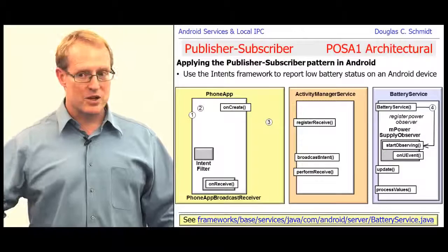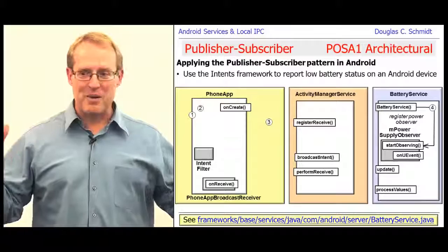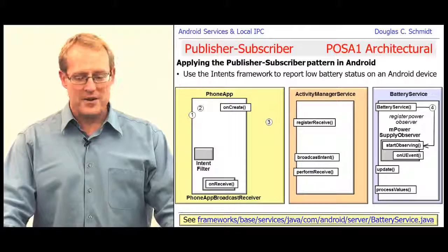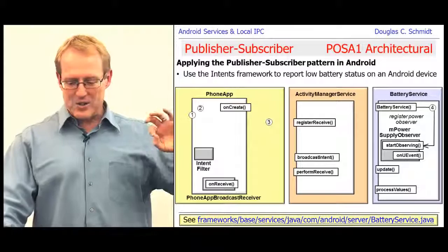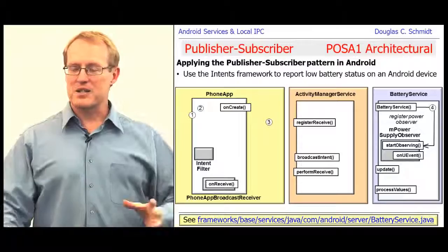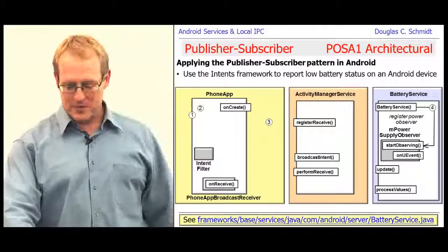At some point later, the battery service — a system service — starts running. When it starts up, its constructor does something interesting: it creates a uEventObserver called mPowerSupplyObserver. This is a cool example of patterns connecting to patterns. It registers this observer with a low-level mechanism — the battery monitoring hardware device driver lurking inside the Android device framework — and then waits for something to happen. This is an example of using the observer pattern at the low level to wait for notification that battery voltage is low.